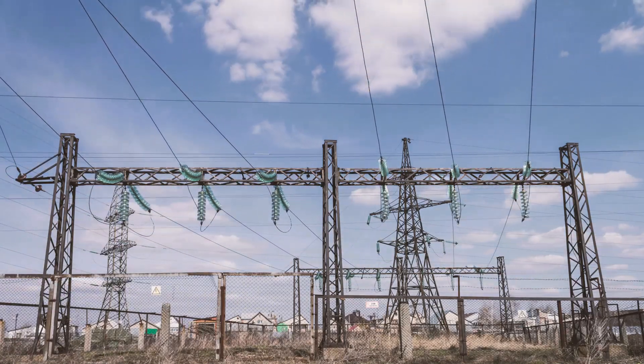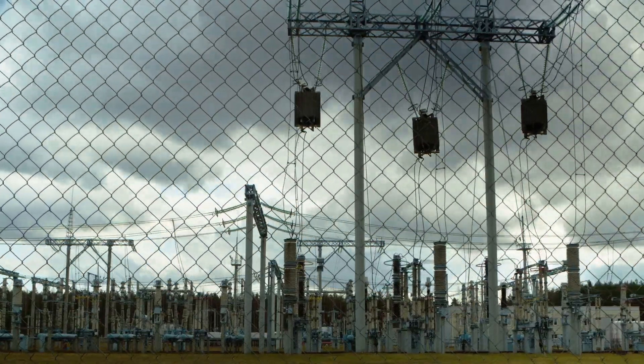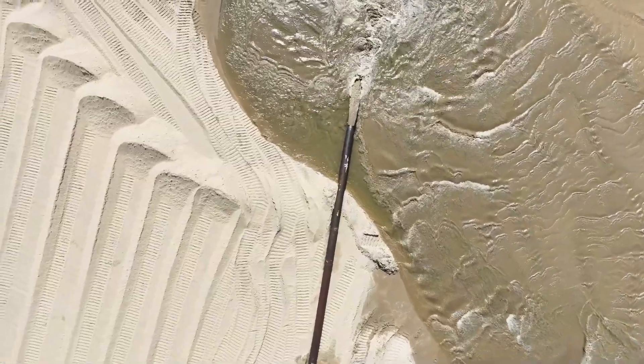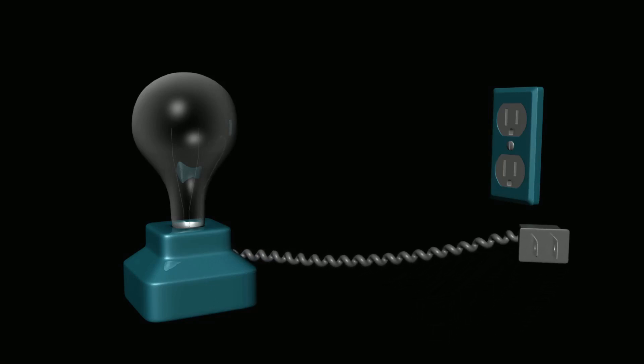Before we can understand motors, we need to talk about electricity. Electricity is the flow of tiny particles called electrons. Think of it like water flowing through a pipe. Just like a pipe creates a path for water, an electric circuit provides a path for electrons.